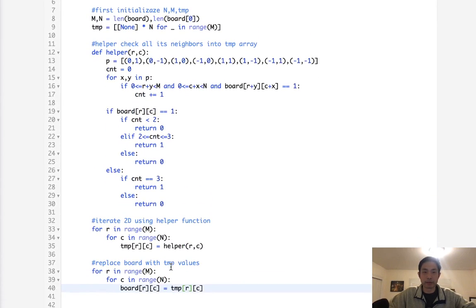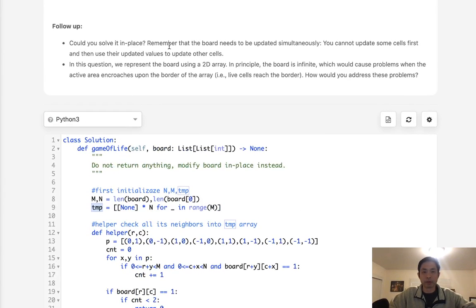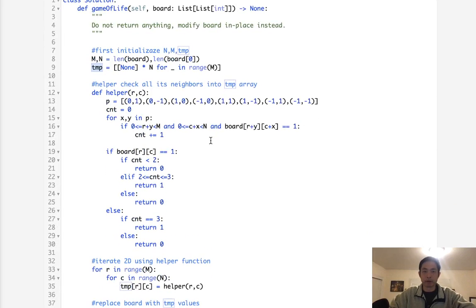So time complexity-wise, this would be m times n times 8, which becomes m times n. But the problem here is we use extra memory. With our temporary array here, we also use m times n extra memory. So the follow-up here, if we want to solve it in place, how can we do that? Well, if we want to solve it in place, we can't have this temporary array here.